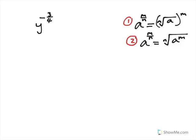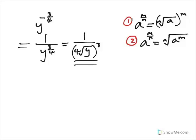There are two rules I've written on the right hand side. If I use rule number 1, well, first of all, we need to write it as 1 over y to the power of 3 quarters. Then I'm going to use rule number 1 and say it's 1 over m is 3, n is 4. So, it's the fourth root of y to the power of 3. So, that's one possibility.